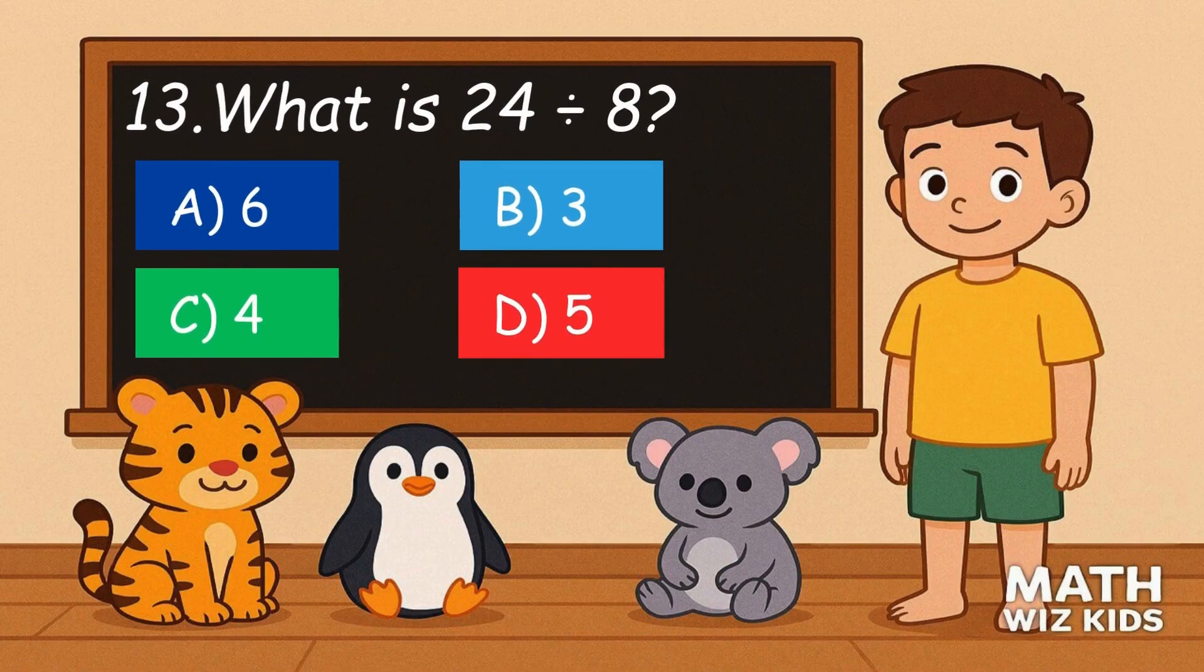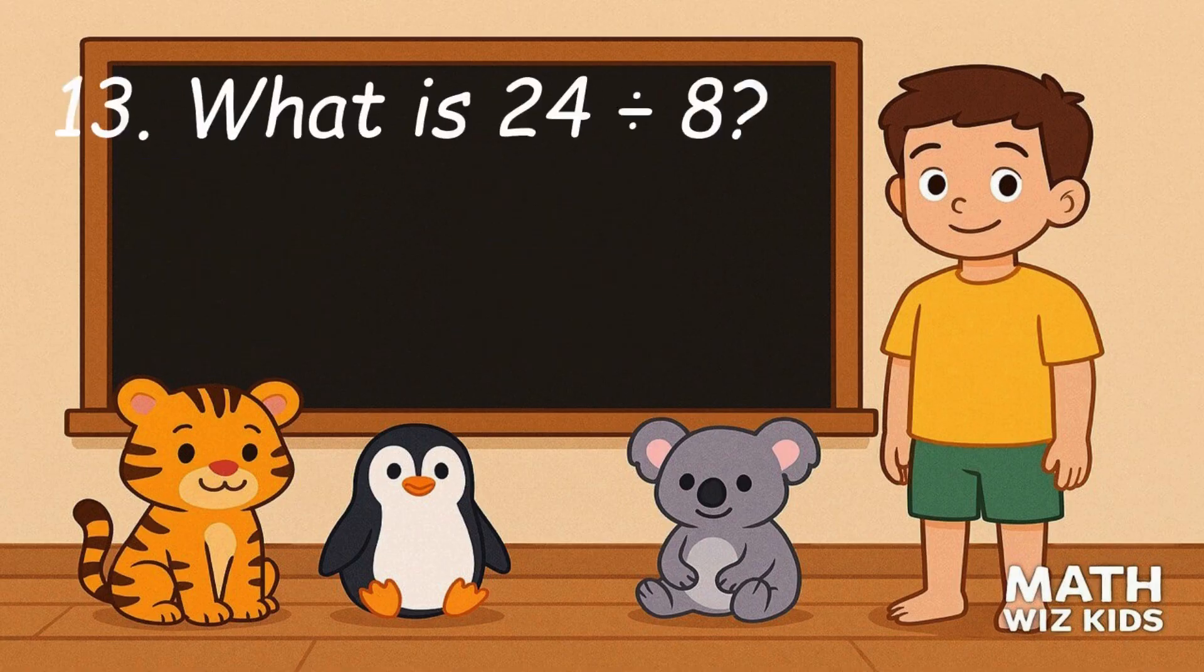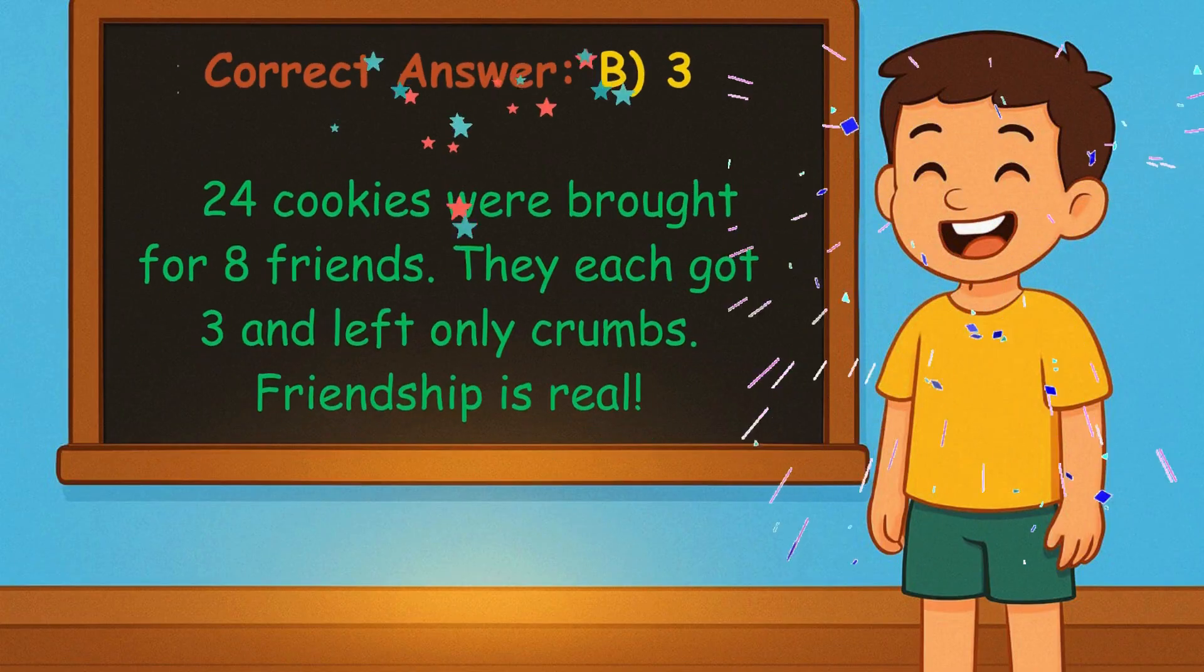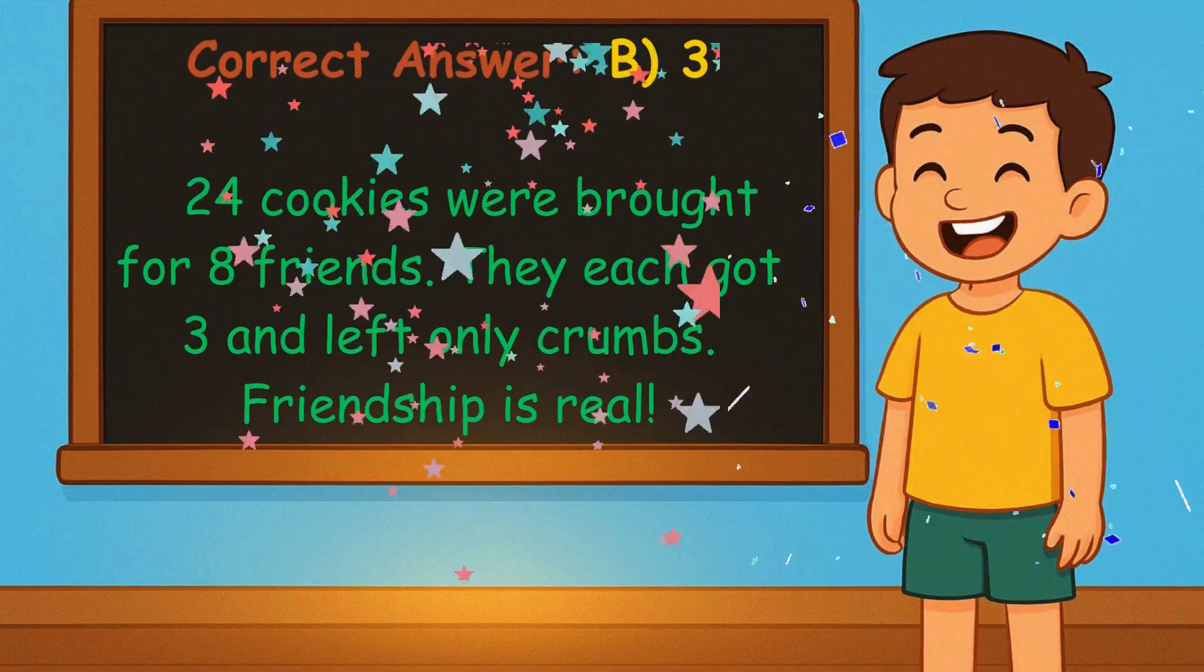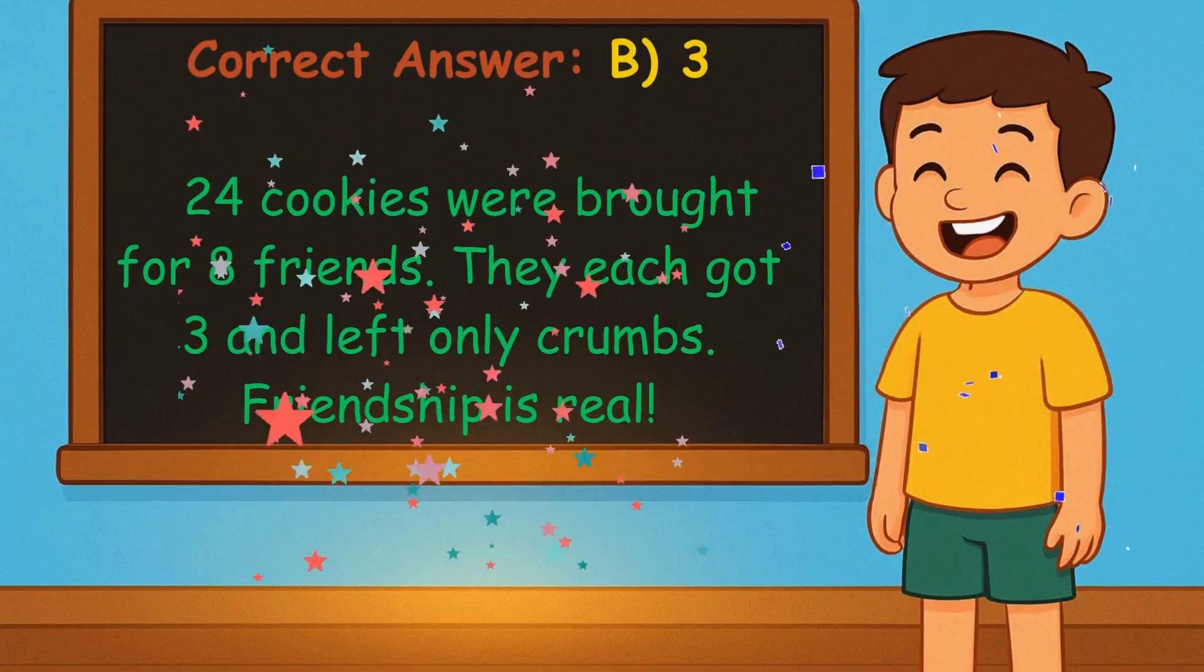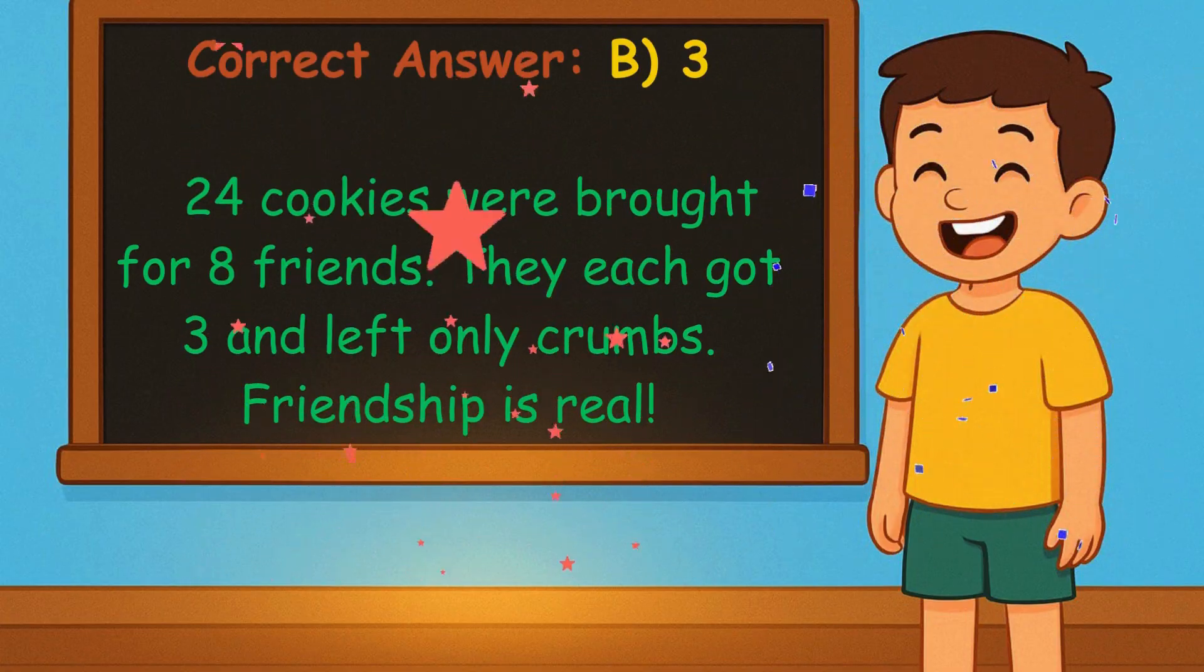13. What is 24 divided by 8? Is it A, 6, B, 3, C, 4, or D, 5? Correct answer is 3. 24 cookies were brought for 8 friends. They each got 3 and left only crumbs. Friendship is real!